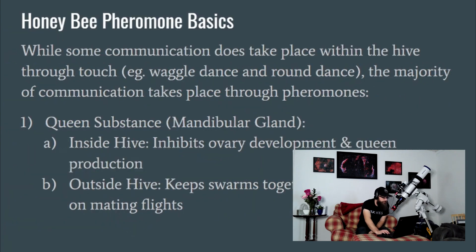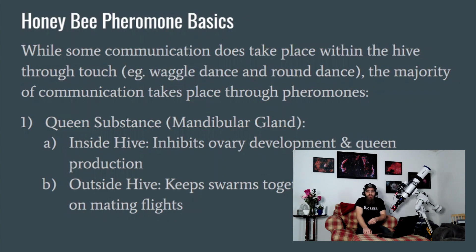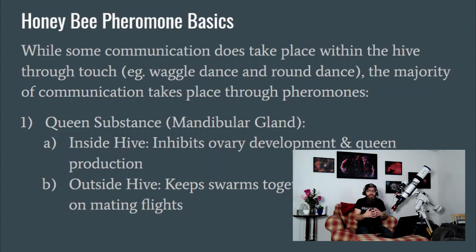Pheromone communication in honeybees is fascinating. These bees aren't talking to each other audibly the way we do — they do have a couple of different dances and some touch communication inside the hive, but for the most part all communication is done through pheromones. There are a bunch of different pheromones that signal different things. The first and in my opinion most important is the queen substance, or QMP — the queen mandibular pheromone — which is the linchpin of a colony.